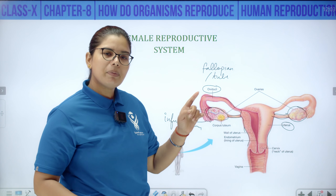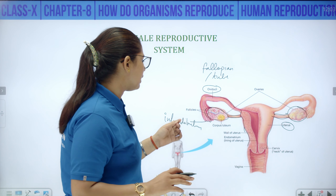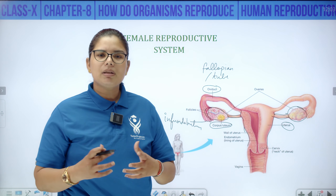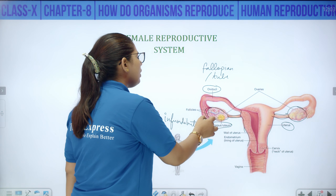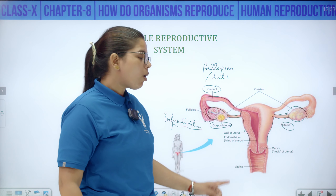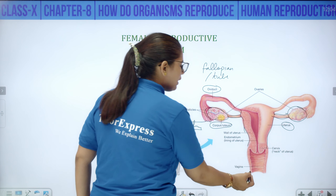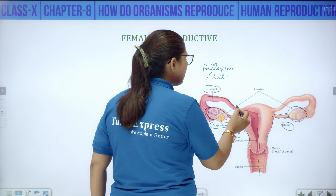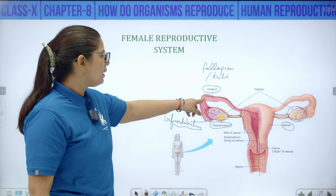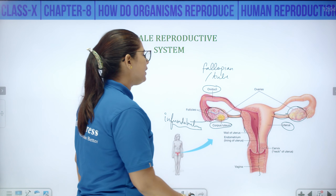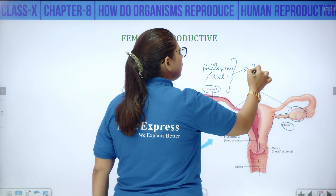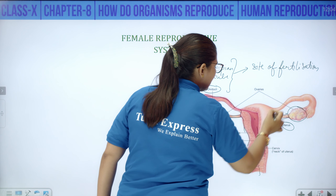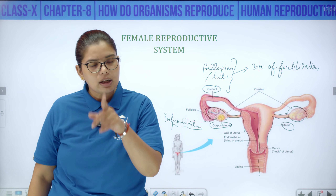When the mature follicle ruptures, ova are released from it. This ova is released from the ovary, and the infundibulum catches it and sends it into the oviduct. Then the penis deposits sperm in the vagina, and the sperm swim through the cervix and uterus to reach the oviduct — where the egg is already present. The sperm and egg meet there and fertilization occurs. So the site of fertilization is the fallopian tube or oviduct — not the ovary.